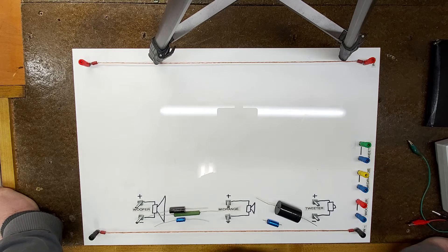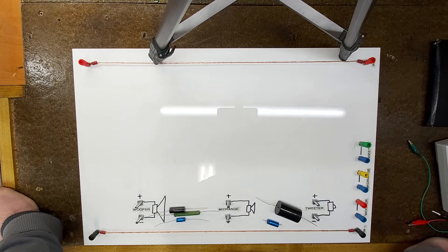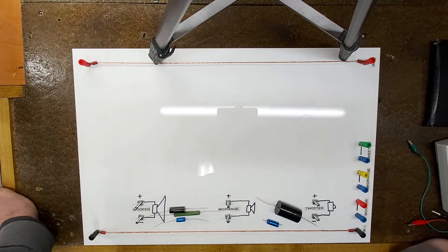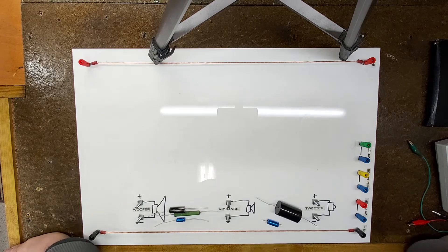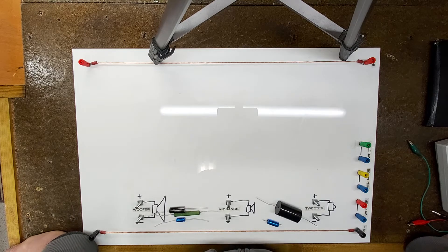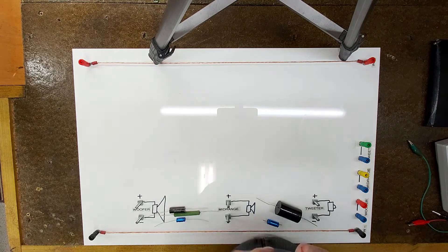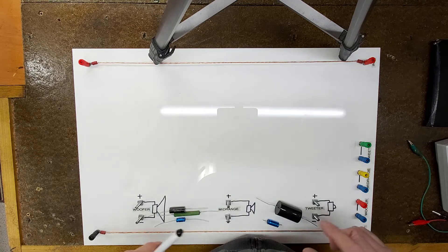So how can that be when they've fitted better components? What's gone wrong? The reason for that is equivalent series resistance, internal resistance of capacitors, and this is where they are falling down.